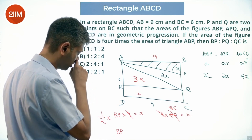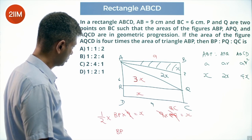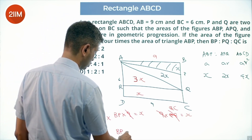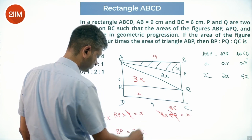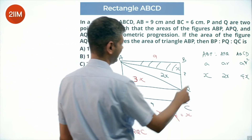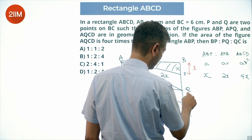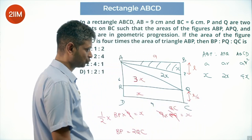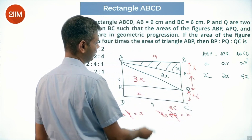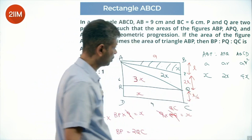From the equations, BP equals 2·QC, or QC equals BP divided by 2. So if BP is length L, then QC is L/2. The area of APQ is 2X, with the same height, so PQ must be 2L.